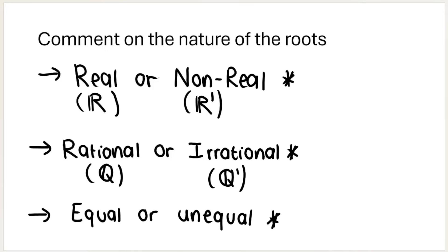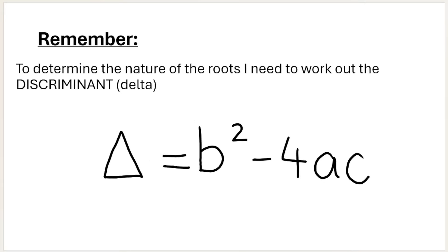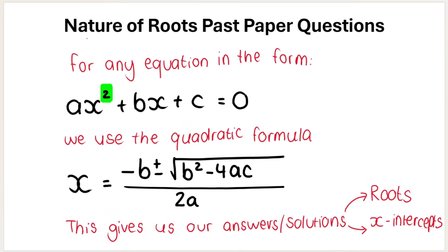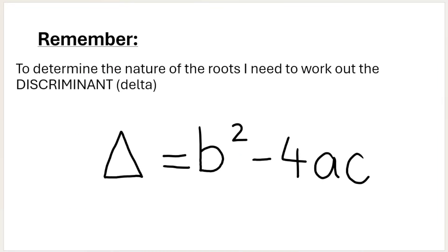How do we work out without solving which category the nature of the roots falls into? We need to use the discriminant. This comes from the quadratic formula — it's this piece of the quadratic formula. When we work out the discriminant, this triangle, we also call it delta. Delta, the discriminant, when you work it out, it's going to give you a particular value.